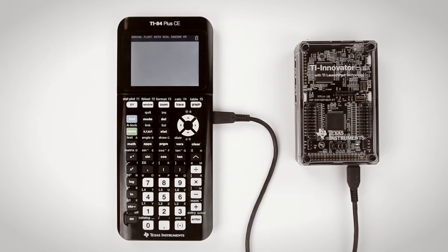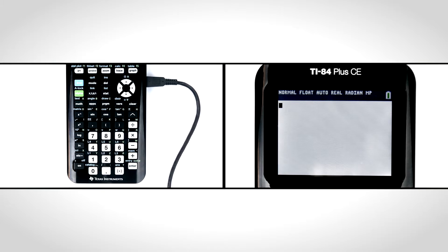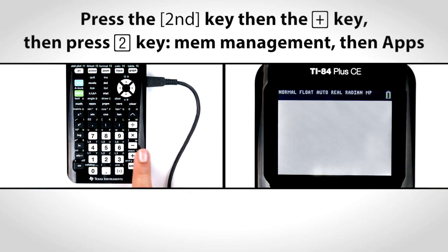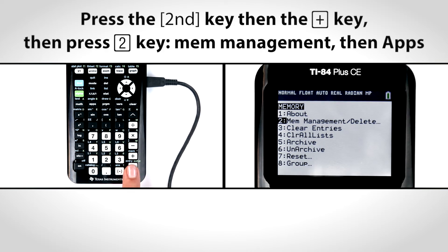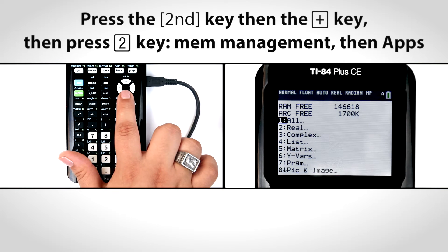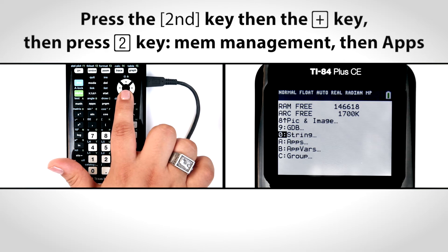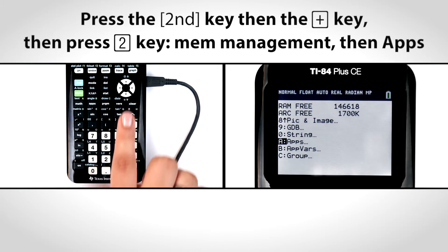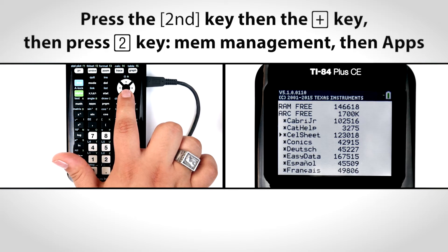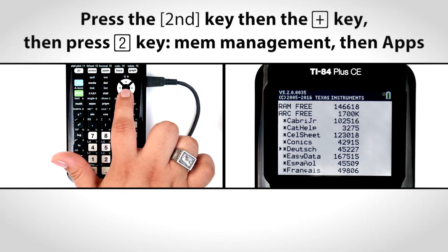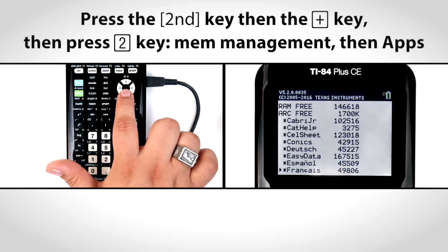Next, confirm that the Hub app is installed. Press the second key then the plus key to open the memory menu. Select MEM Management, then Apps, and look for Hub in the list of installed apps.